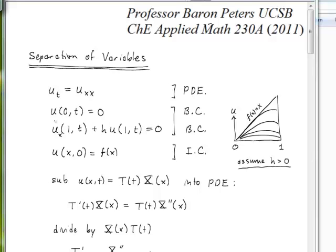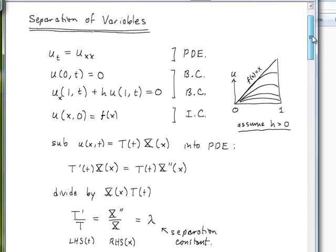At the other end we will use a Robin boundary condition, and we assume that the parameter h is a positive parameter. Our initial condition is u of x and zero equals f of x.